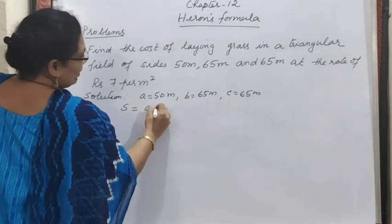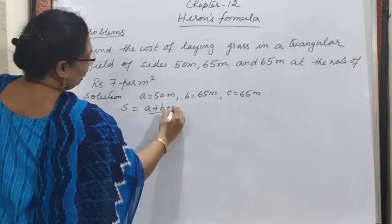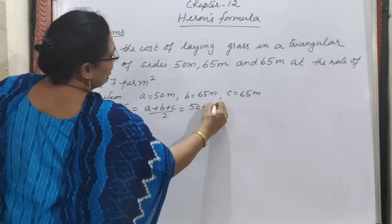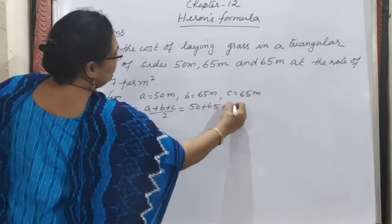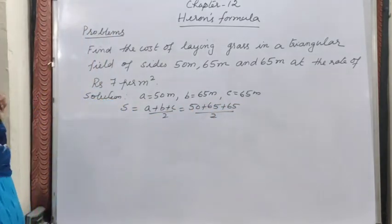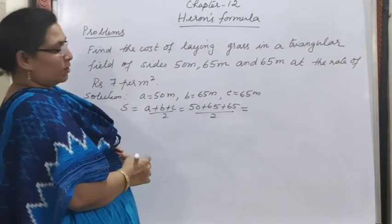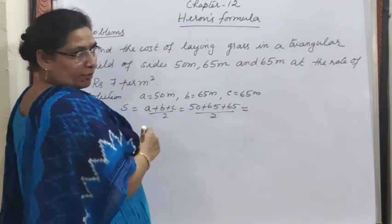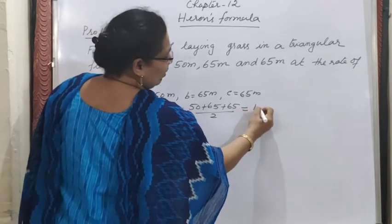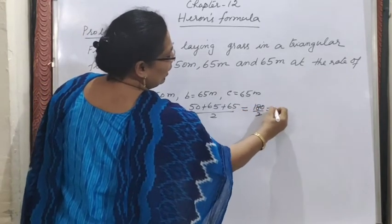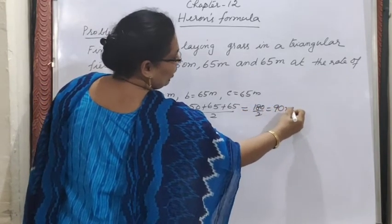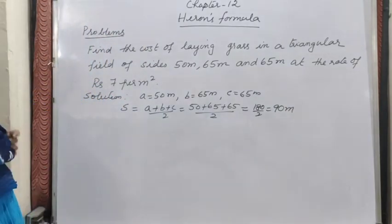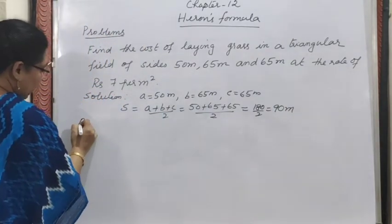Semi-perimeter s = (a + b + c) / 2 = (50 + 65 + 65) / 2 = 180 / 2 = 90 meters. Now that we have s, the next step is to find the area of the triangle using Heron's formula.